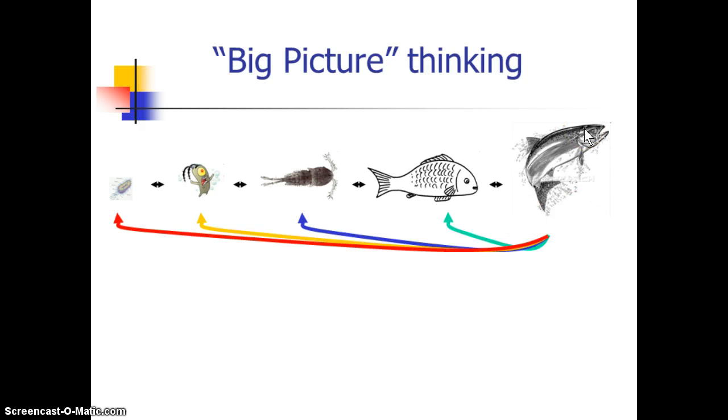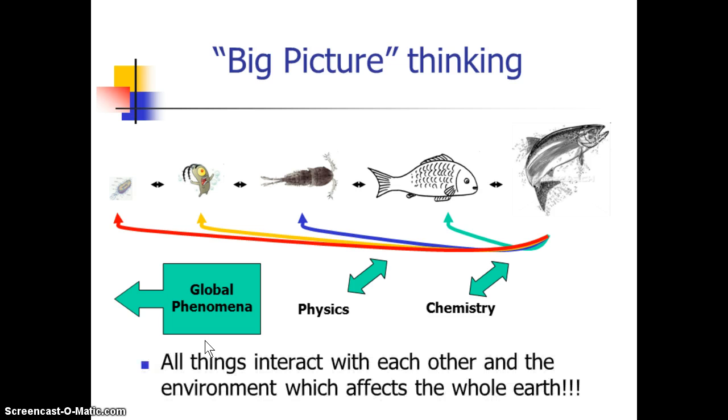These all affect or are affected by the chemistry. They're either taking up some chemistry in their consumption or body maintenance, or they're putting out some chemistry during their metabolic processes. And then the physics of the ocean is what stirs this all up and guides where it happens and when it happens. And the whole picture adds up to what we call a global phenomenon. And global phenomena is just a fancy way of saying that all things interact with each other and the environment.